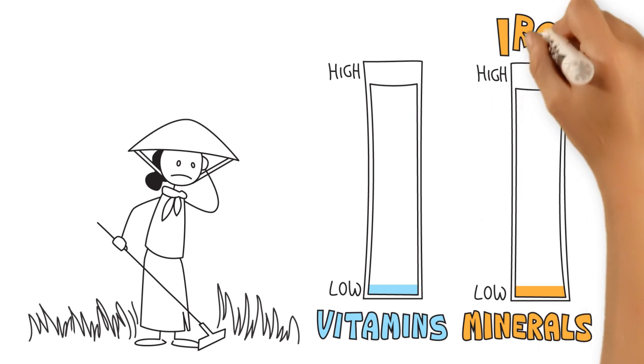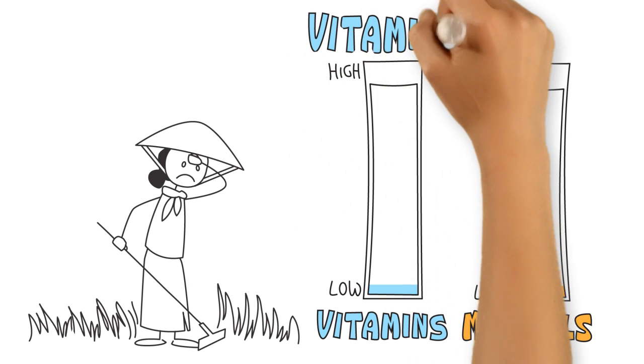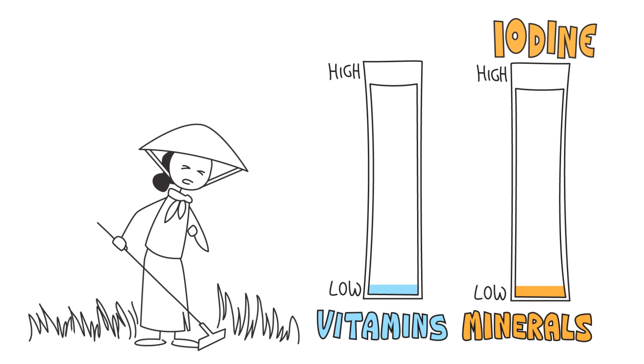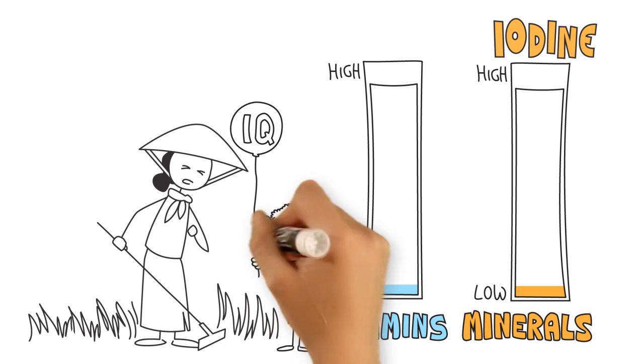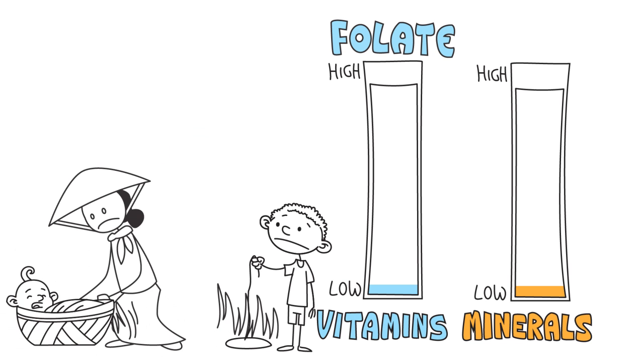Not enough iron makes us feel tired and less able to learn, work, and ensure healthy childbirths for both mother and child. Insufficient vitamin A weakens our immune systems and can lead to blindness. Pregnant mothers with severe iodine deficiency can give birth to children with permanent lower IQ. And insufficient folate is linked with a higher risk of birth defects like spina bifida.